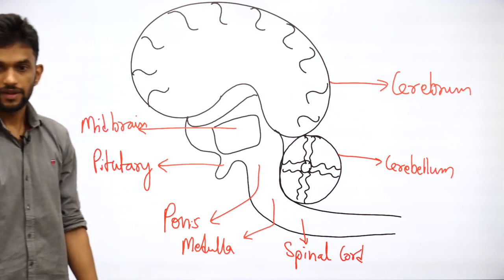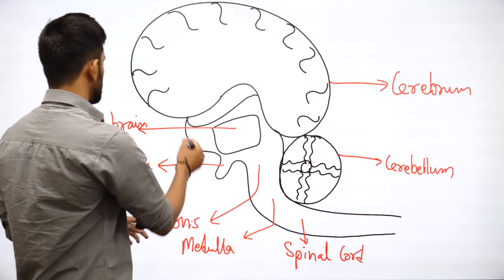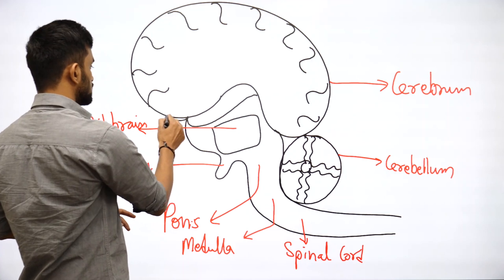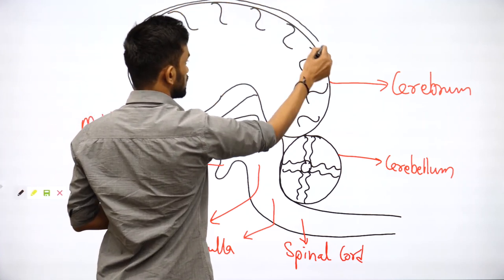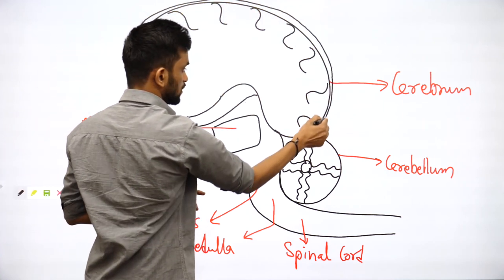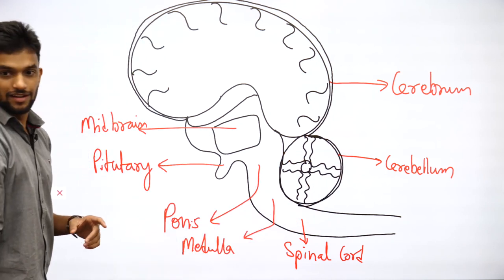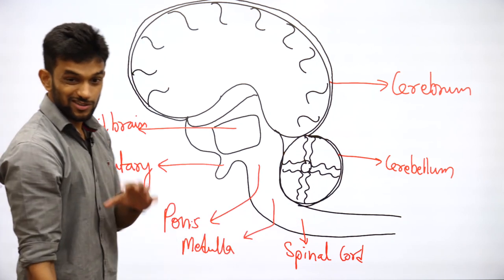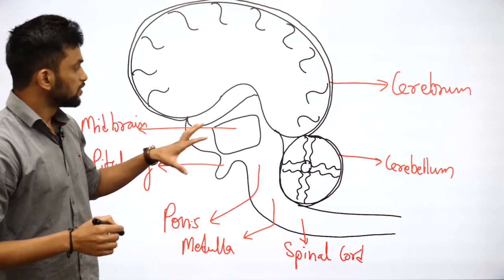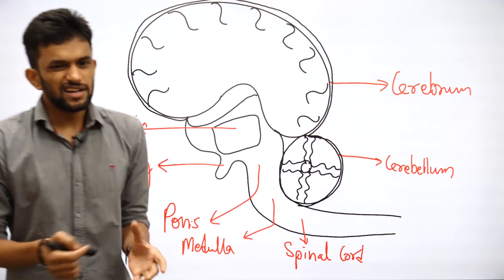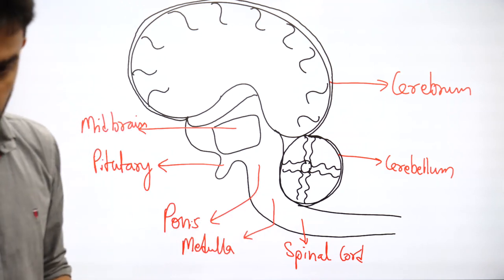You can also add meninges to the diagram to make it look a little more detailed. This is how you draw the brain — it looks a little complicated but that's how it is done.